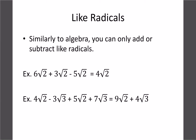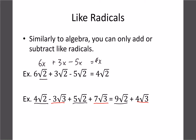With radicals it works the same — we have to have the same radical. So instead of 6x + 3x − 5x in algebra, here the radical is the like term. We just do 6 plus 3 minus 5 to get 4 root 2. In the next example, 4 root 2 and 5 root 2 combine to get 9 root 2, and negative 3 root 3 and 7 root 3 combine to give 4 root 3. The radicals must match.